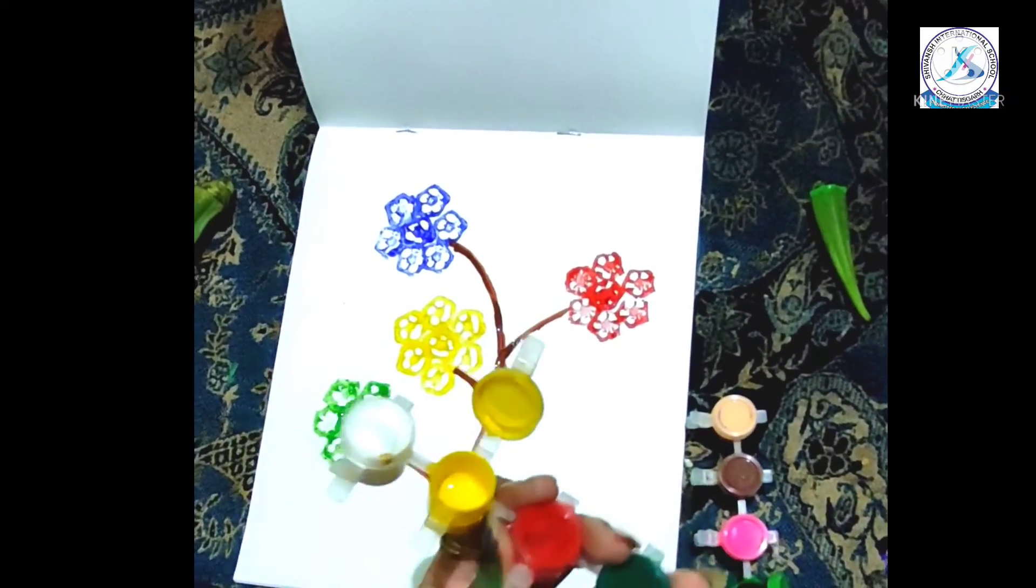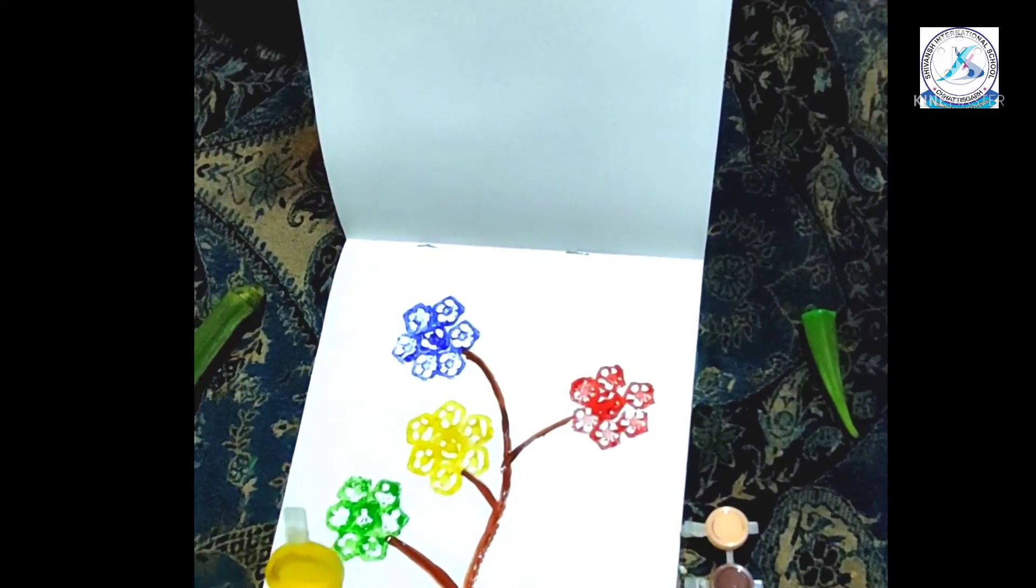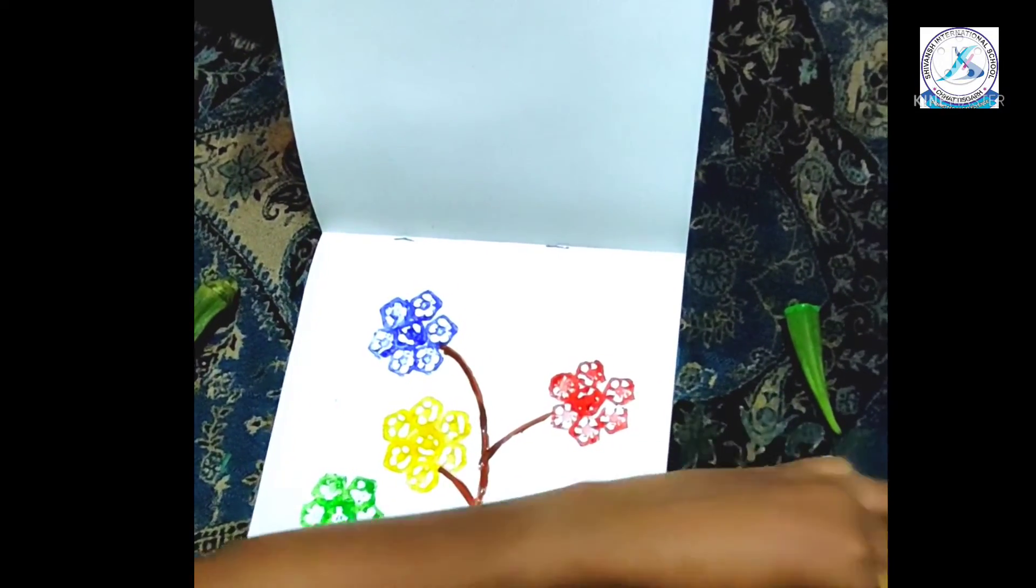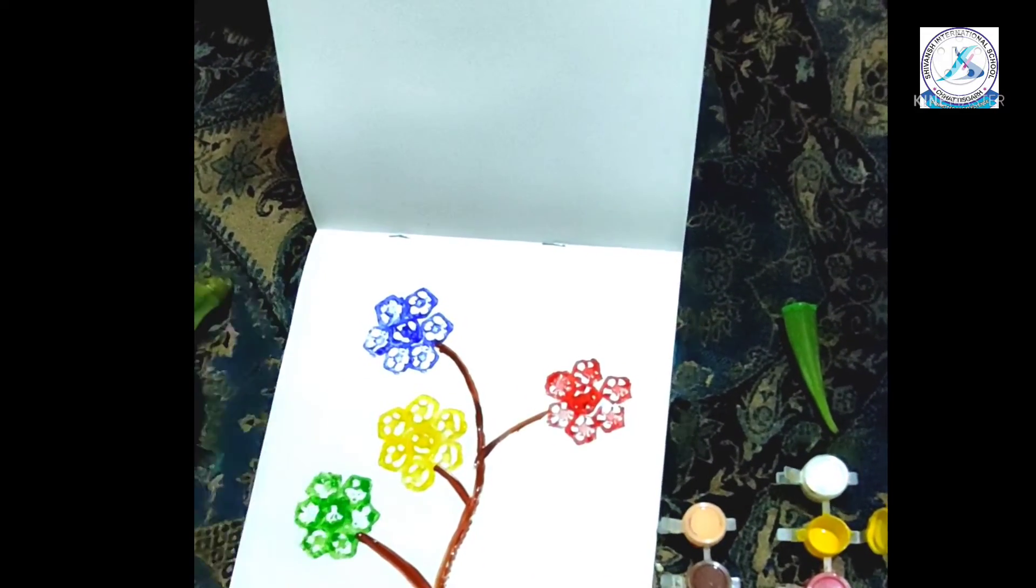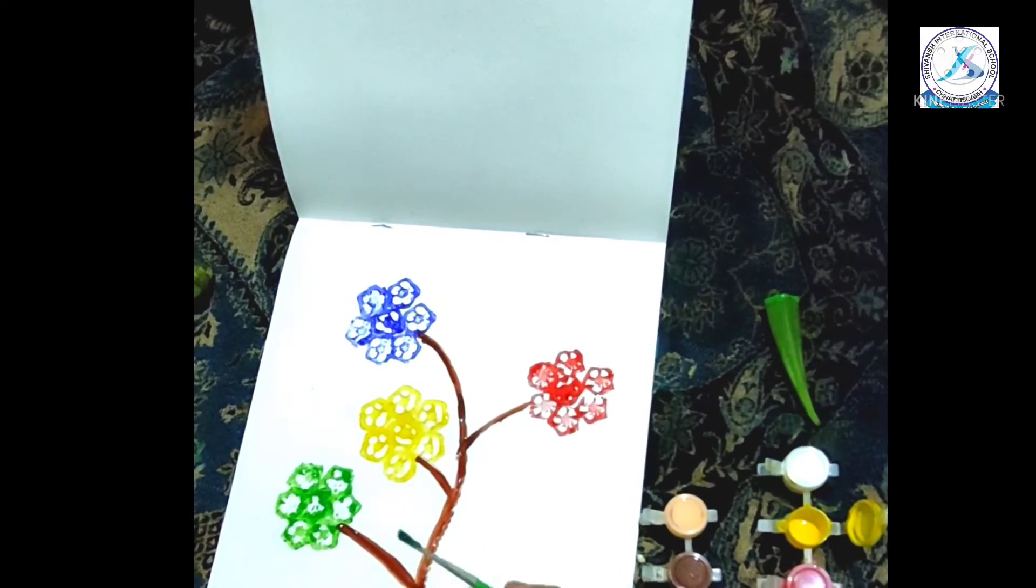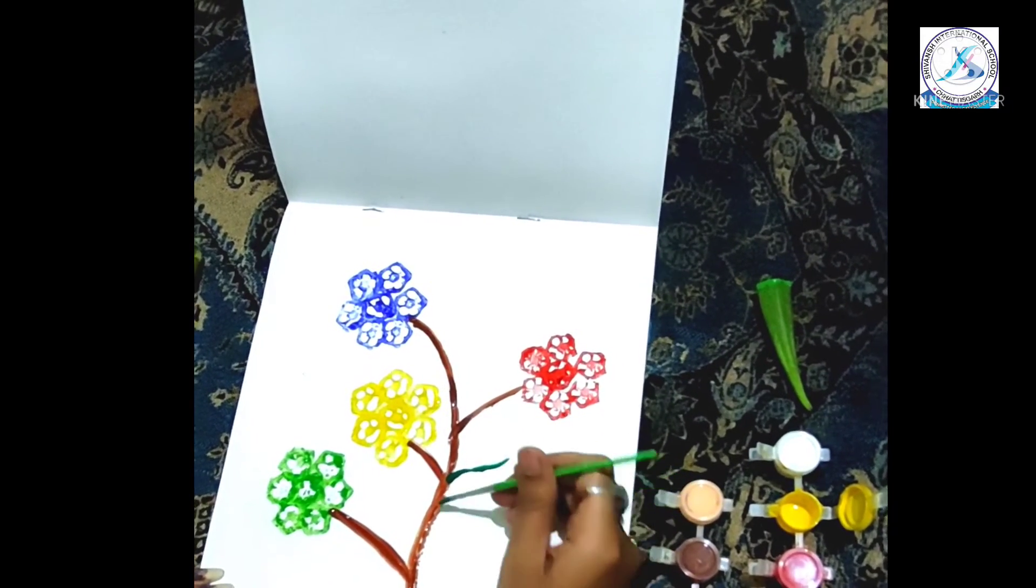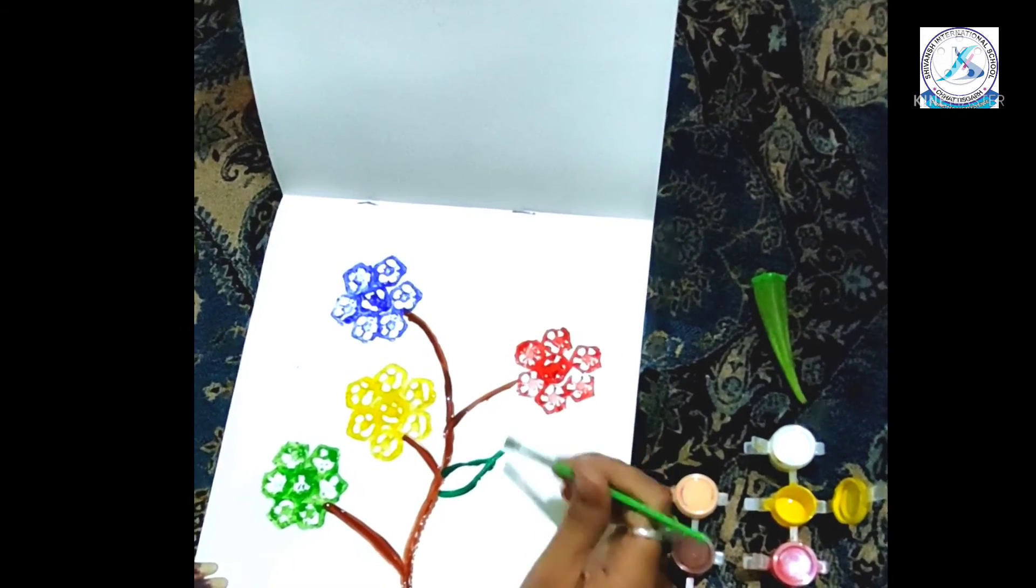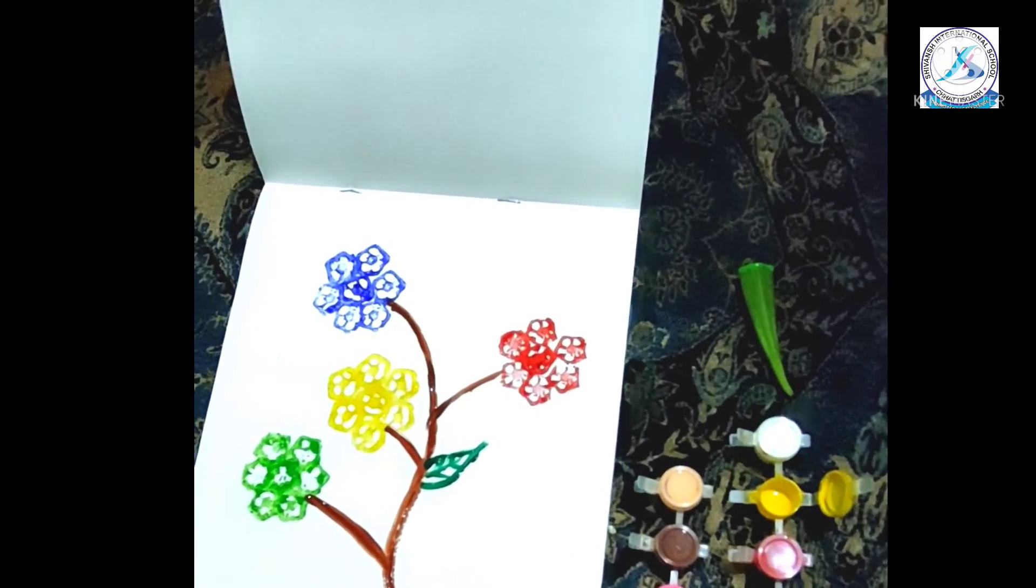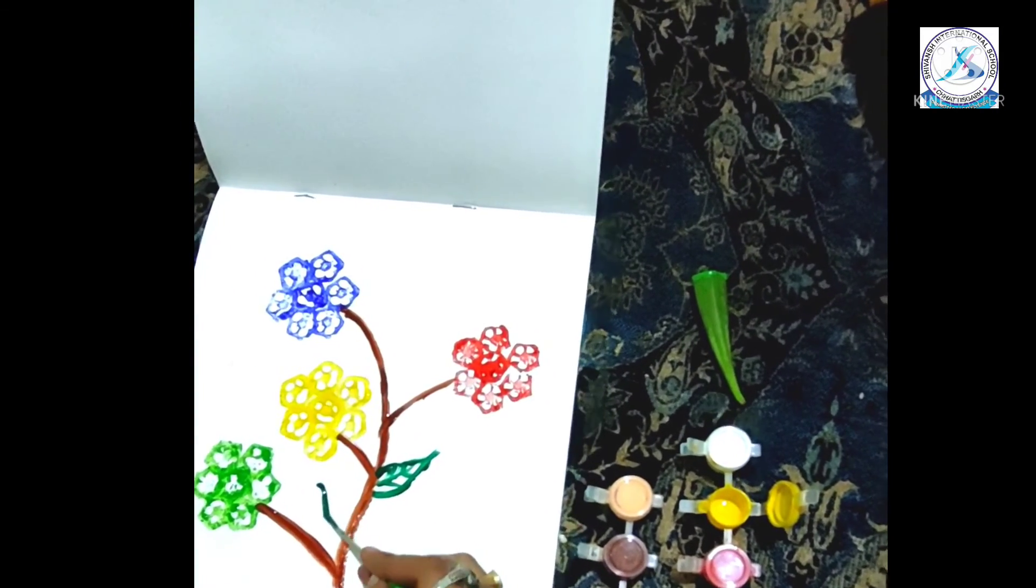Take dark green color to draw leaf. Yes, one leaf at the right and one leaf at the left.